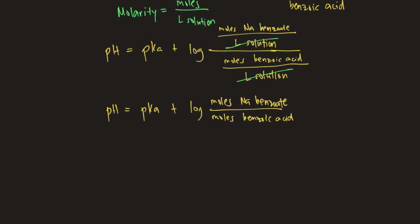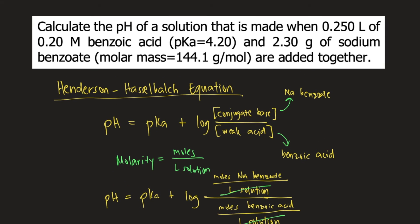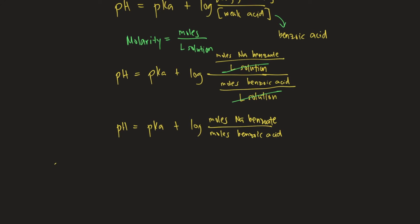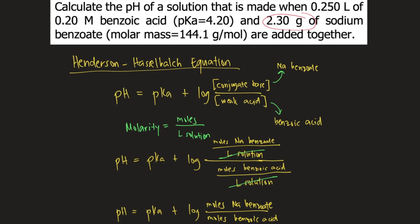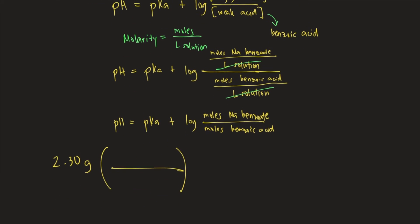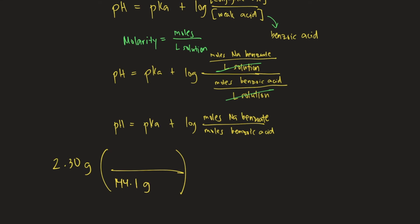Let's solve first for the moles of sodium benzoate. In the problem, we are given the mass of sodium benzoate, which is 2.30 grams. The molar mass is also given: 144.1 grams per mole. So we put 144.1 grams on the bottom and 1 mole on top. Grams cancel, giving us 0.01596 moles of sodium benzoate.